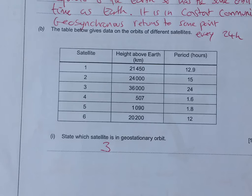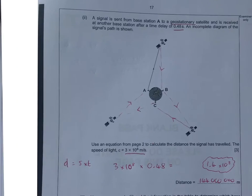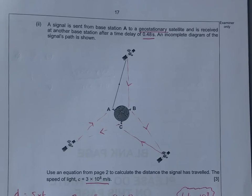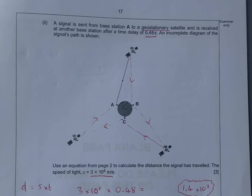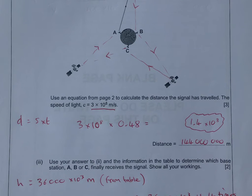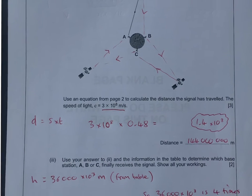State which satellite is in geostationary orbit, so we're looking for a 24-hour period. It's got to be 3. Then we've got a bit of a diagram that we're going to have to do. A signal is sent from base station A to a geostationary satellite. There's a time delay of 0.48 seconds there. An incomplete diagram is shown.